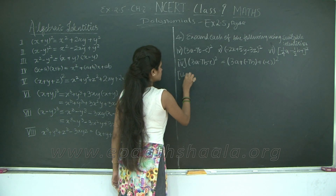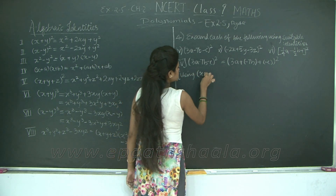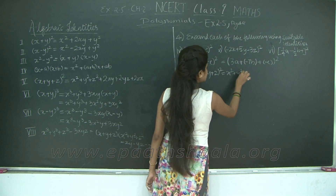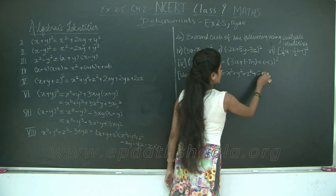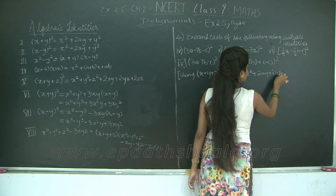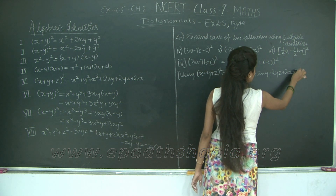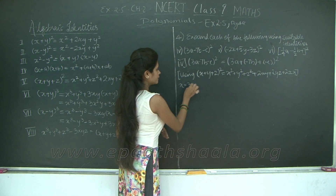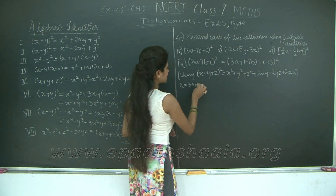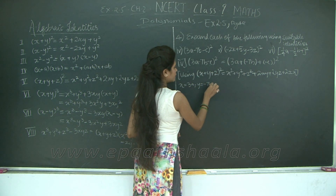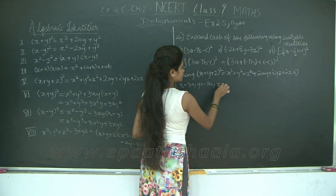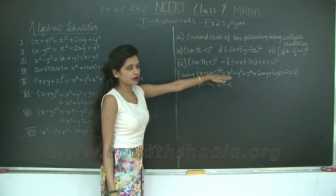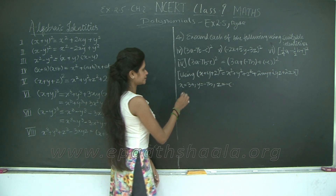Using identity number 5: (x + y + z)² = x² + y² + z² + 2xy + 2yz + 2zx. Let's compare to find the values of x, y and z. My x is 3a, y is -7b, and z is -c. Now we are going to substitute these values into this expression and find the solution.